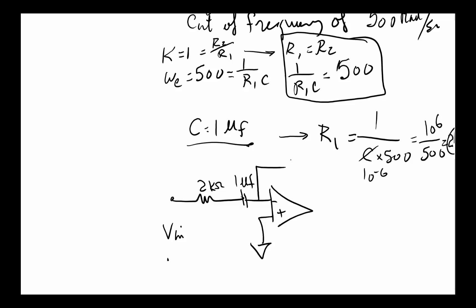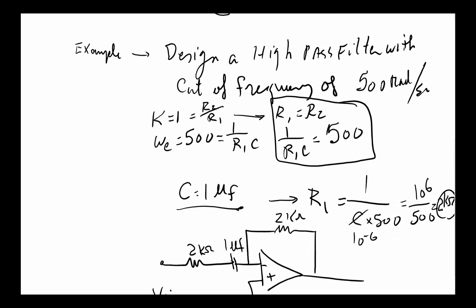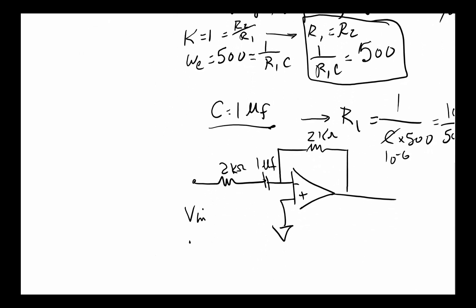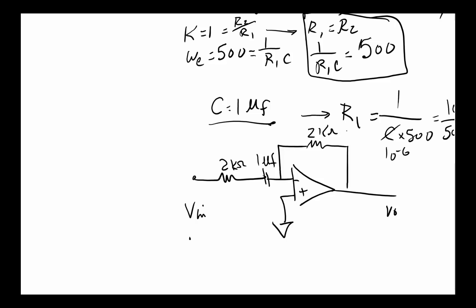We will have a resistor here of 2 kilohms, and this is Vout. When we look at this, the gain or transfer function is going to be minus 1 times ωC (which is 500) divided by S plus 500.